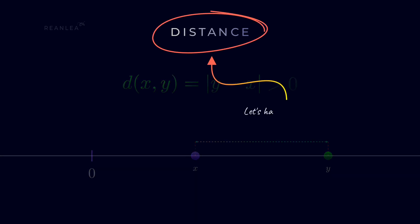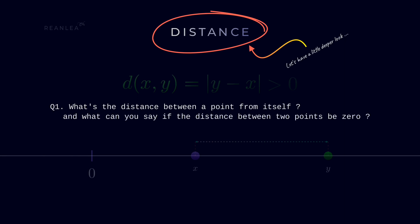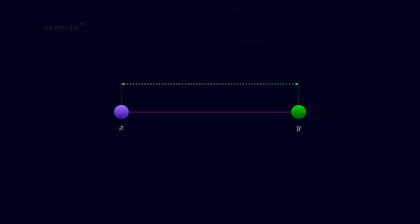Now, let's have a deeper look at the distance between two points. What's the distance between a point from itself? And also, what can you say if the distance between two points is 0? So, without loss of any generality, let's consider the distance between x and y to be 1. Now, you can simply visualize that if the point x approaches y, then the distance between those two points approaches 0.